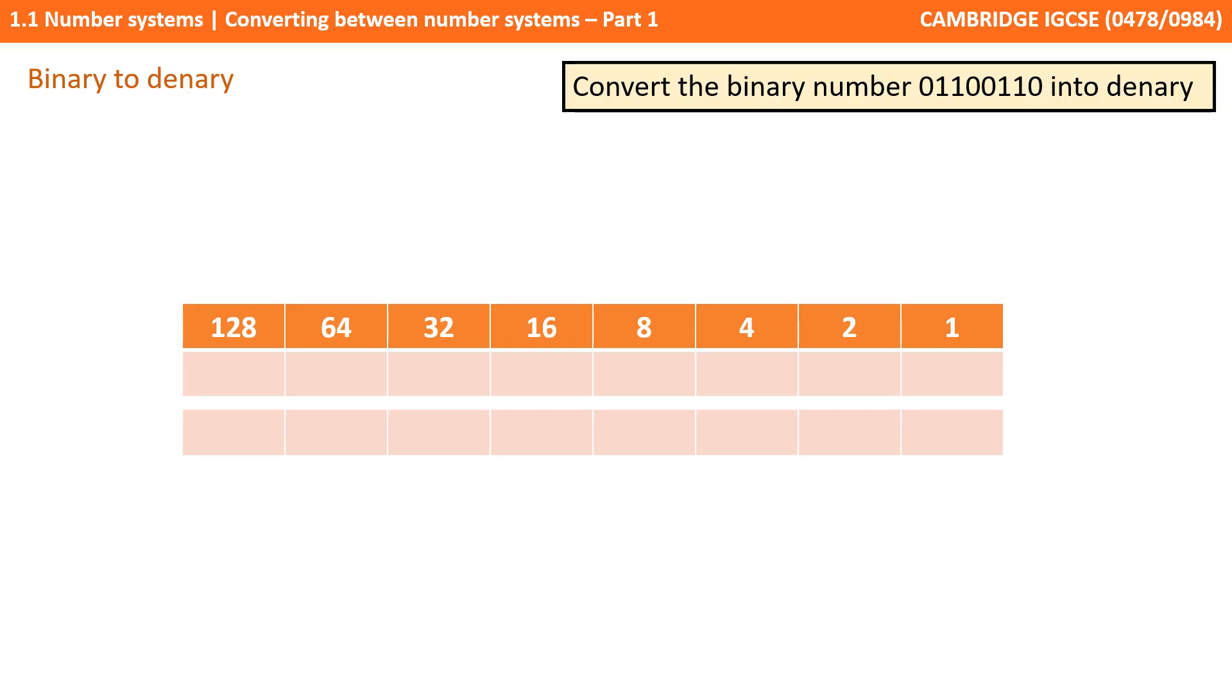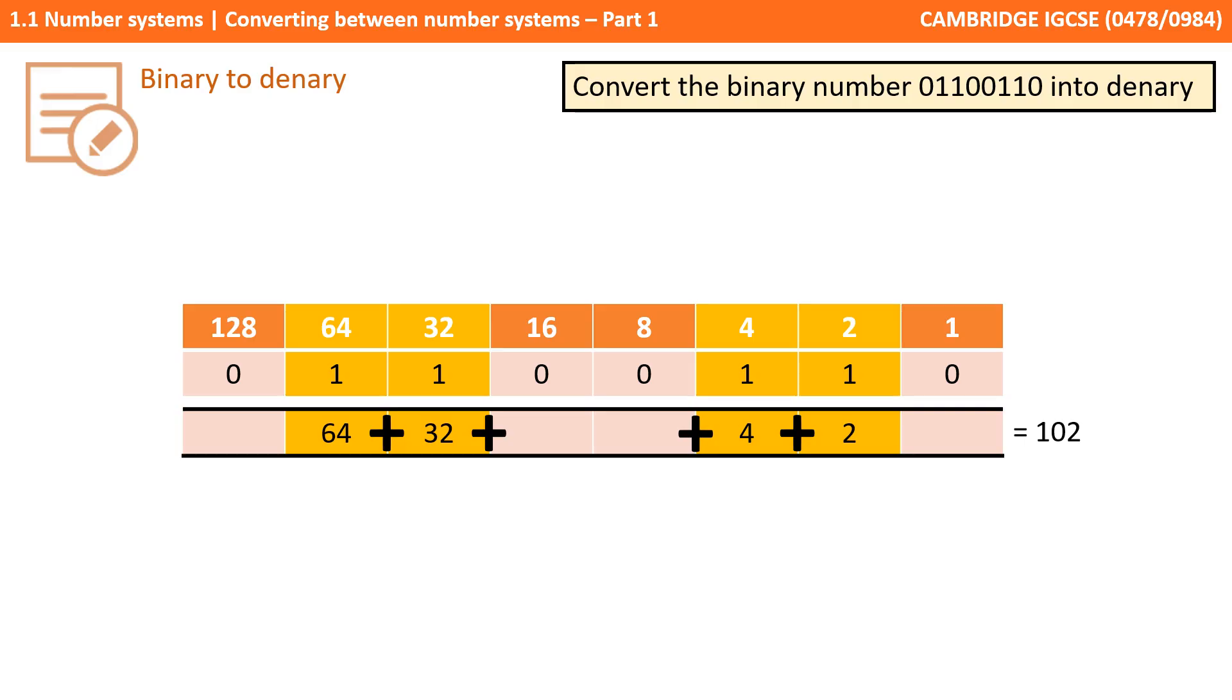To convert from binary to denary, again, use a number line and simply add up the values of the columns that have a 1 in. So first we write out our binary number. In this case, 01100110. And now all we need to do is add up the columns with 1s in. So we've got a 64 plus a 32, that's 96, plus a 4 is 100, plus a 2 is 102. So the binary base 2 number 01100110 in base 10 denary is 102.